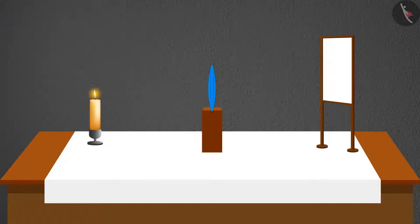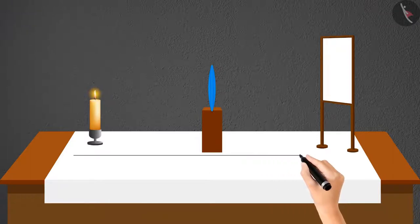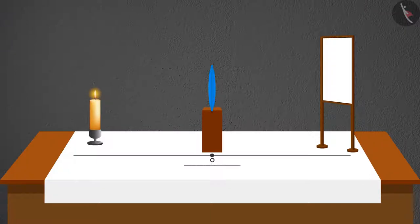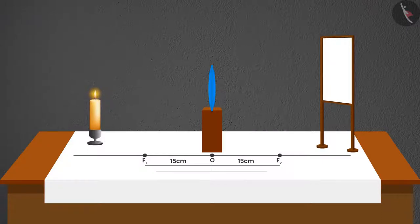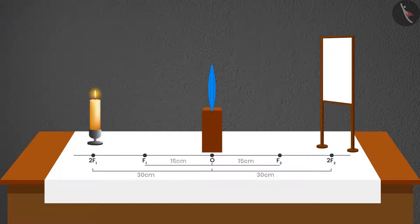First of all, we draw a straight line on the sheet and mark a point in the middle and name it O. F1 and F2 are inscribed at 15 cm on either side of O, and 2F1 and 2F2 at a distance of 30 cm in the same fashion.